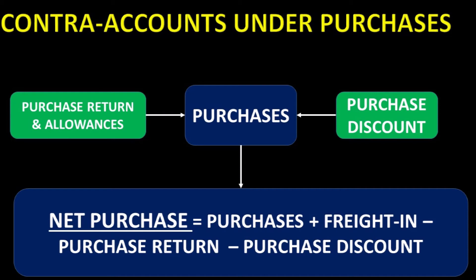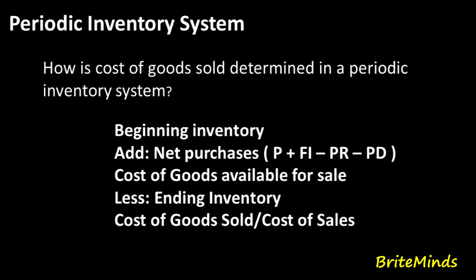How is Cost of Goods Sold determined in a periodic inventory system? Using the balances of the periodic inventory accounts, COGS is computed as follows: first, determine the beginning inventory, then add the net purchases (Purchase Price + Freight-in − Purchase Returns − Purchase Discounts) to get the Cost of Goods Available for Sale, then subtract the ending inventory to arrive at Cost of Goods Sold.